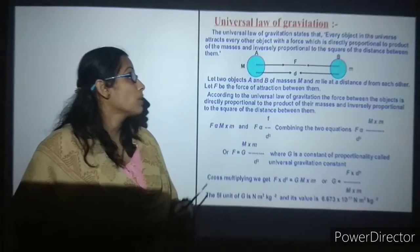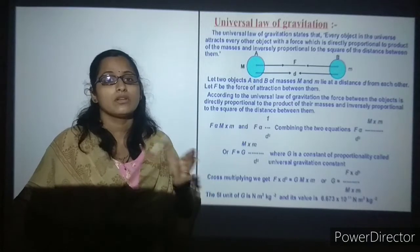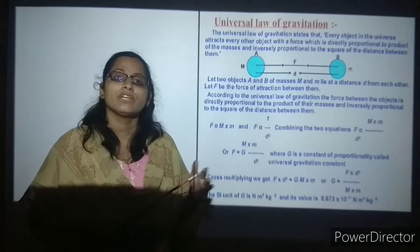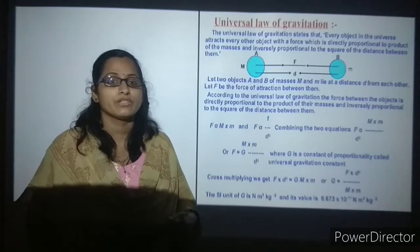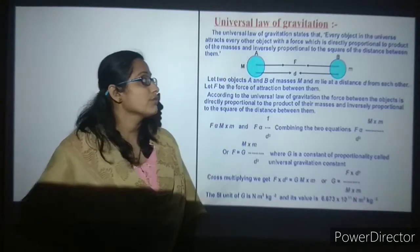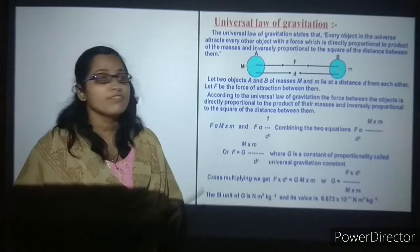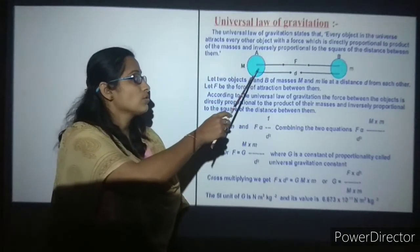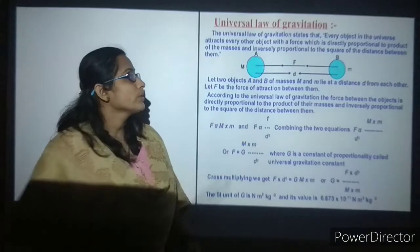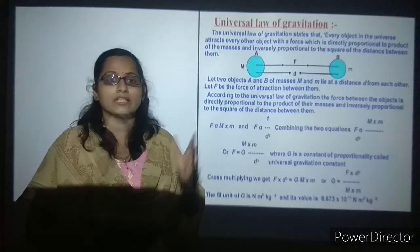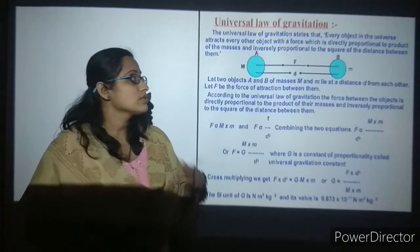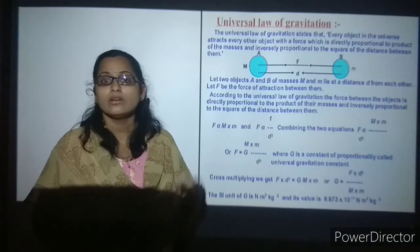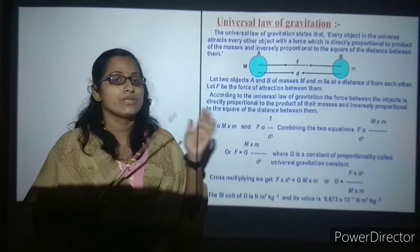Moving on, let's understand the universal law of gravitation. The universal law of gravitation is based on Newton's second law of motion. It states that every object in the universe attracts every other object with a force which is directly proportional to the product of their masses and inversely proportional to the square of the distance between the two objects.